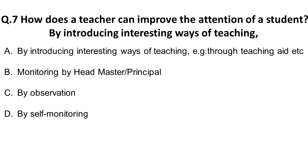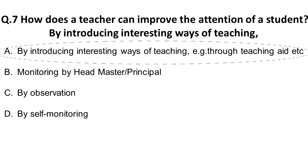The seventh question: how can a teacher improve the attention of a student? The correct answer is by introducing interesting ways of teaching through teaching aids. I hope you have read the four options — the correct answer is by introducing interesting ways of teaching through teaching aids.